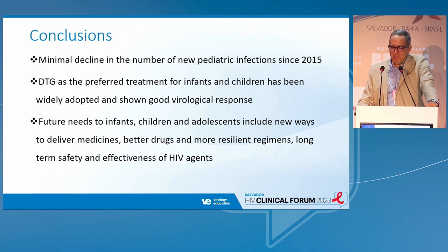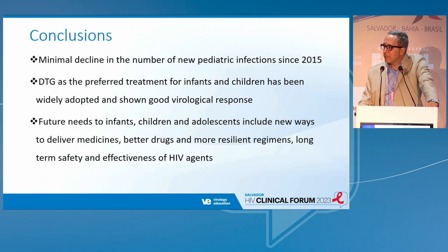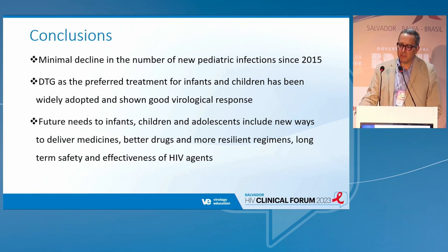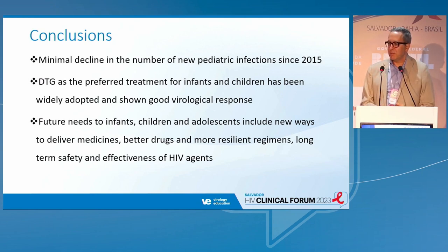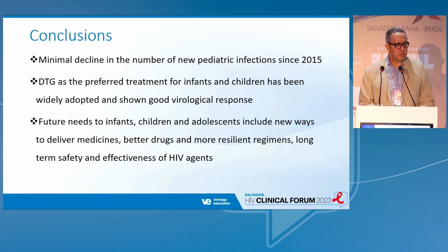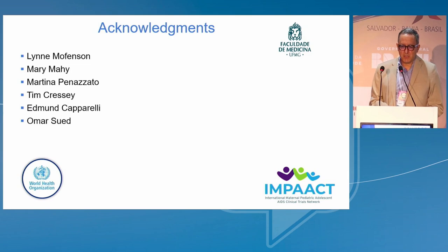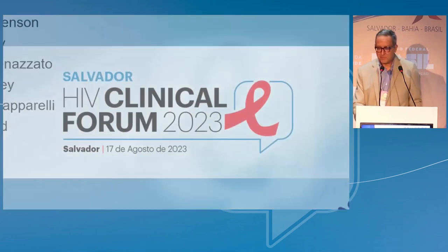In conclusion: we have seen a very small decline in new pediatric infections since 2015. Dolutegravir is the preferred treatment for infants, children, and adolescents with good virological response, but we cannot feel like winners yet. We need new drugs, long-term monitoring and follow-up — particularly regarding weight gain, metabolic alterations, and neuropsychiatric complications. Thank you.